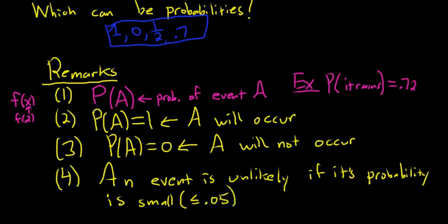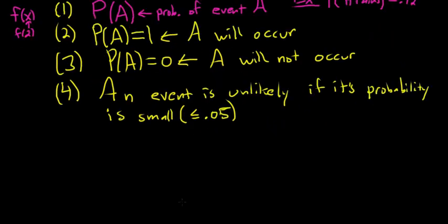So if something has a less than 5% chance, 5% or less chance of occurring, it's unlikely. So like 2% chance of occurring, unlikely. 7% chance of occurring, not unlikely. So 5% or less, it's considered unlikely.